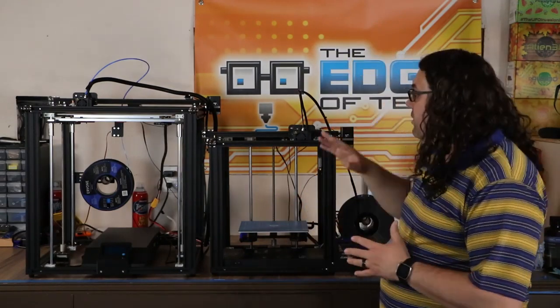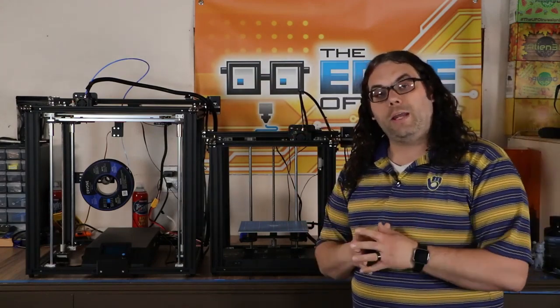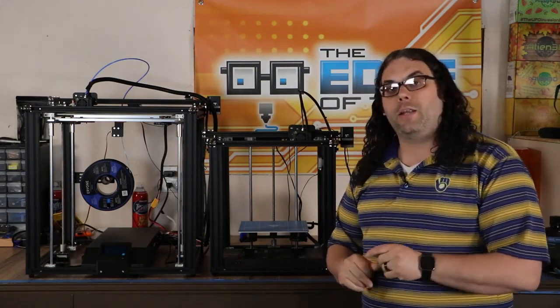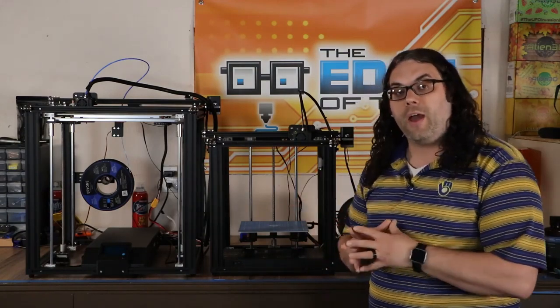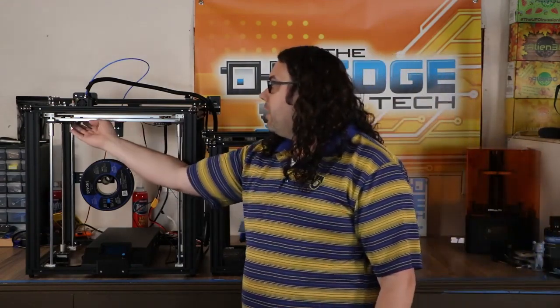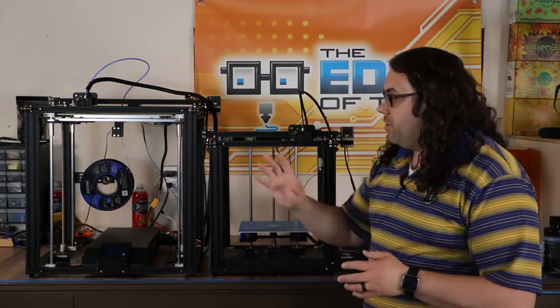As far as the Ender 5 goes, there is no auto bed leveling from the factory, but you can always add BL Touch or an easy ABL. All of my other Ender 5s have easy ABLs on them because they're very simple to add to the Ender 5 here. They both use the wheels underneath here for bed leveling. I would always tram the bed before you do any auto bed leveling anyway, just to be safe.